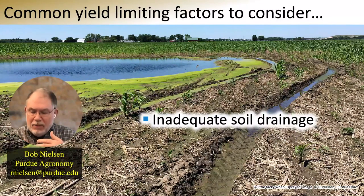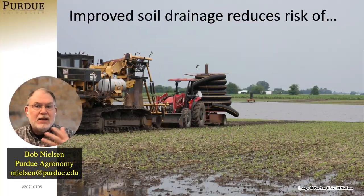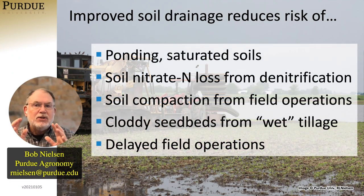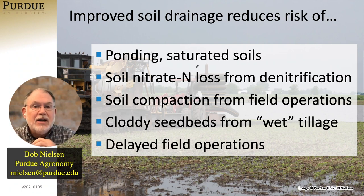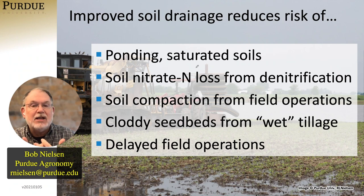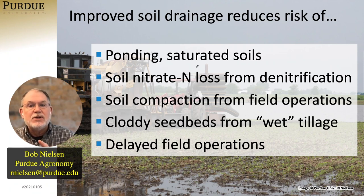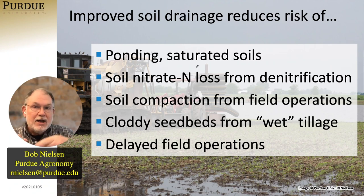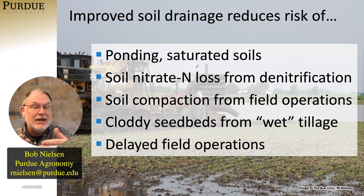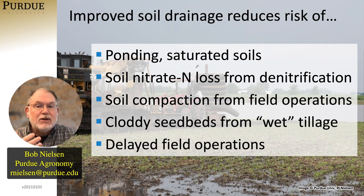If we can improve soil drainage by either tiling or by putting in surface drains, we can reduce the occurrence, severity, and duration of ponding or saturated soils. That's going to help roots develop the way they should and reduce the risk of plants being stunted. Improving soil drainage also reduces the risk of losing soil nitrate nitrogen due to denitrification that occurs in saturated soils. Over time, by improving soil drainage, it may allow you to back off on your nitrogen fertilizer rates because you're losing less nitrogen due to denitrification.